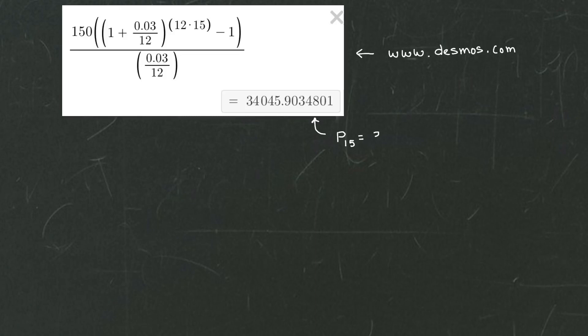And so if I write that down as actually an amount of money, that would be $34,045 and I have to round to the nearest cent, so that's going to be 0.90 cents. That's the answer to part A.